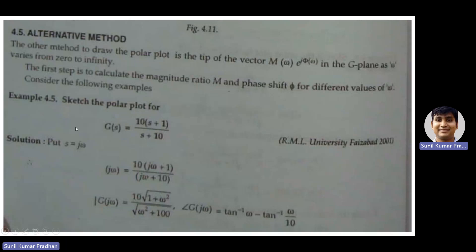Let's go directly to an example. We will draw the polar plot for G(s) = 10(s+1)/(s+10). So in the numerator we have 10(s+1) and in the denominator we have (s+10). The first thing we have to do for a polar plot is put s equal to jω. When you put s = jω, your G(jω) will be 10(jω+1)/(jω+10). Then we have to find its magnitude.